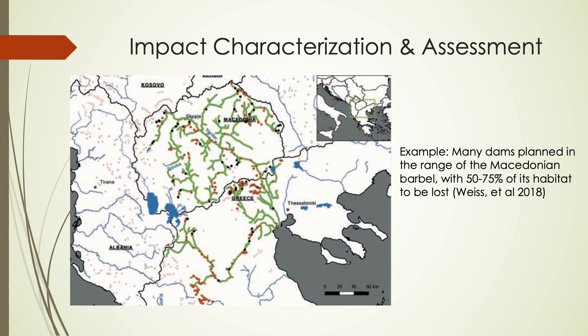Let's return to the concept of cumulative impacts. In this example, a small hydropower project is planned. The impact assessment for the project may show small impacts, but when considered in combination with the many other small hydropower projects planned in the region, the impacts on the local and global viability of endemic fish species is profound. This really dramatizes the importance of considering cumulative impacts.